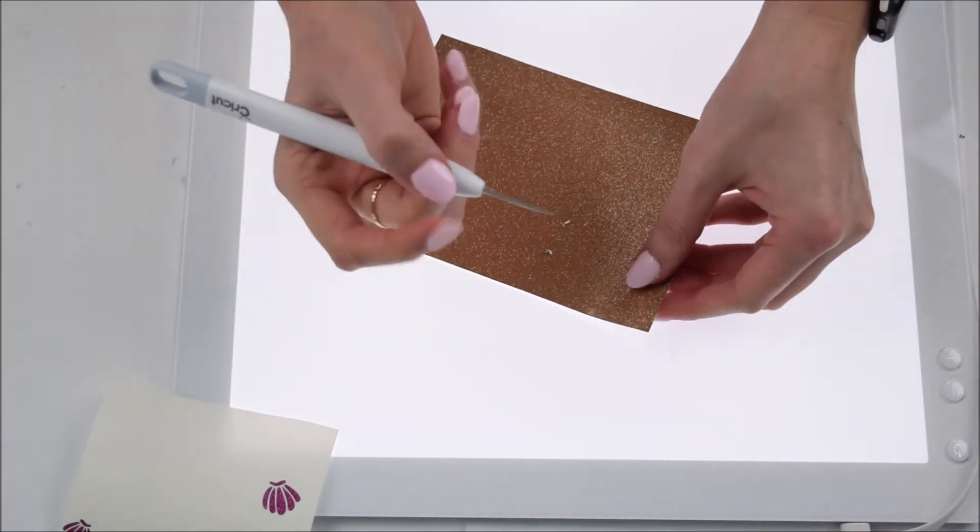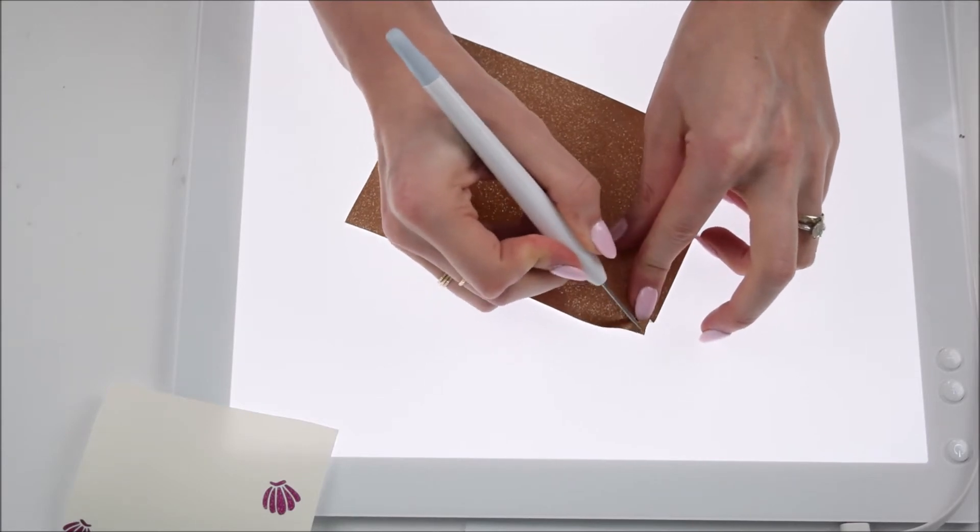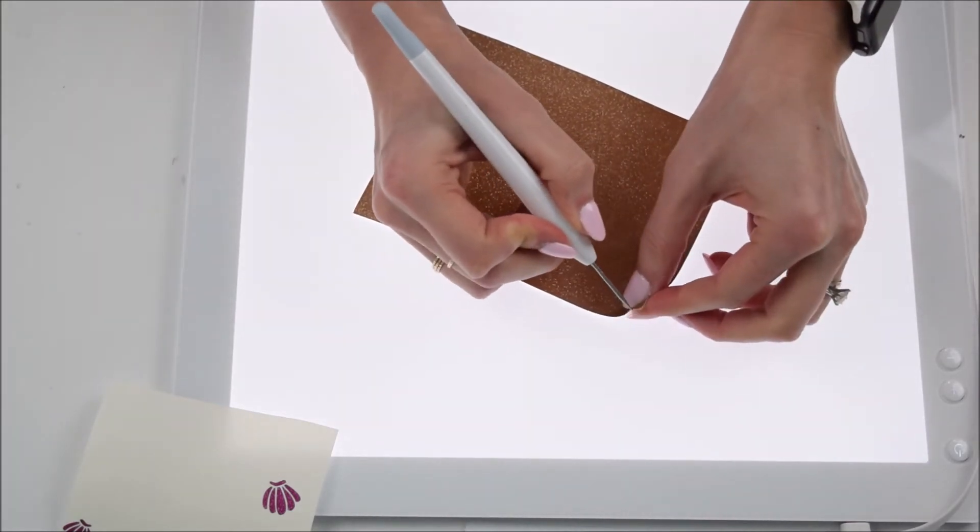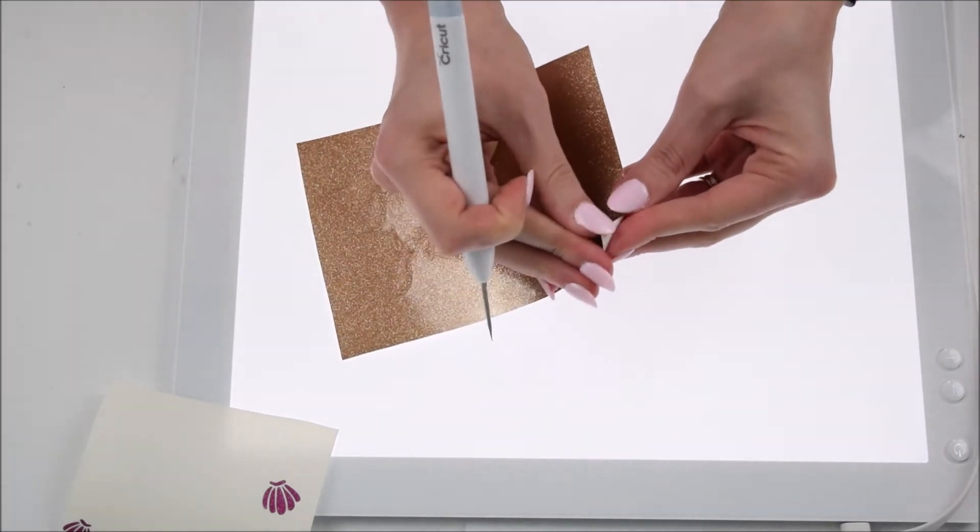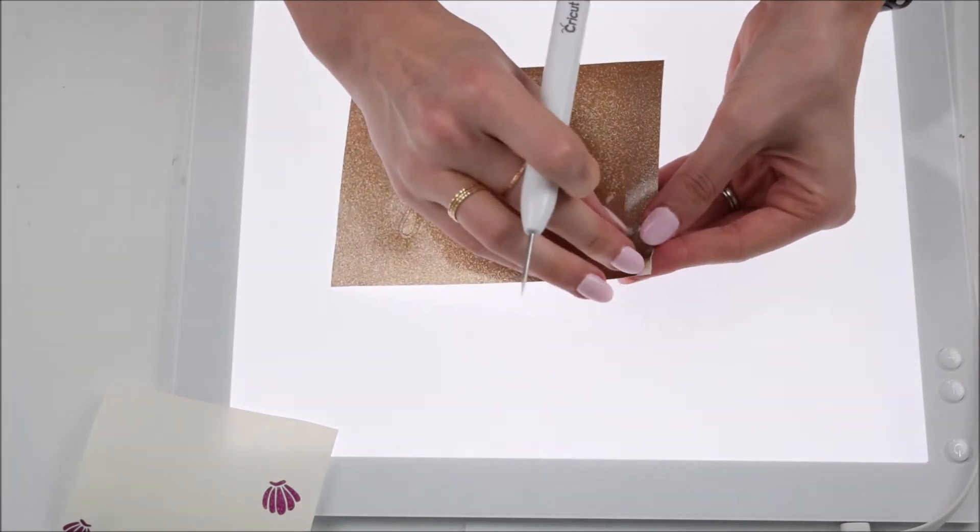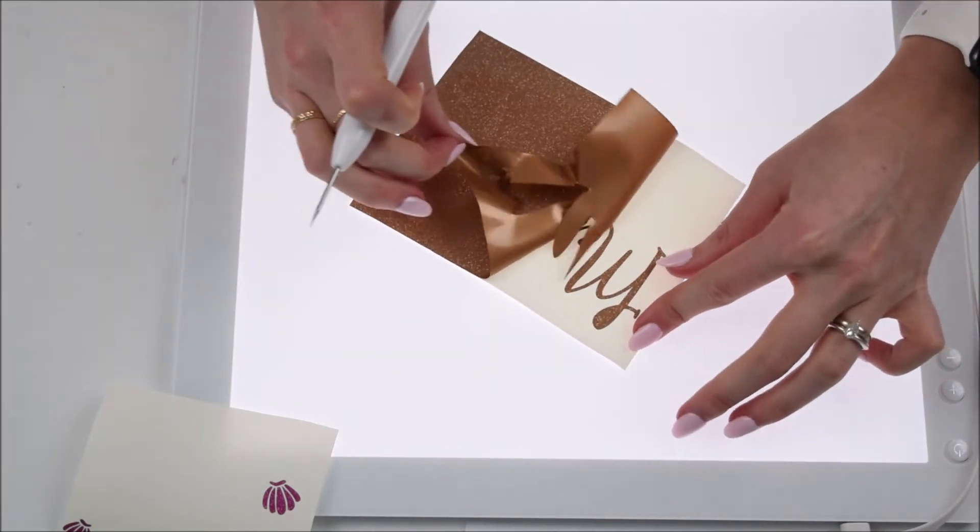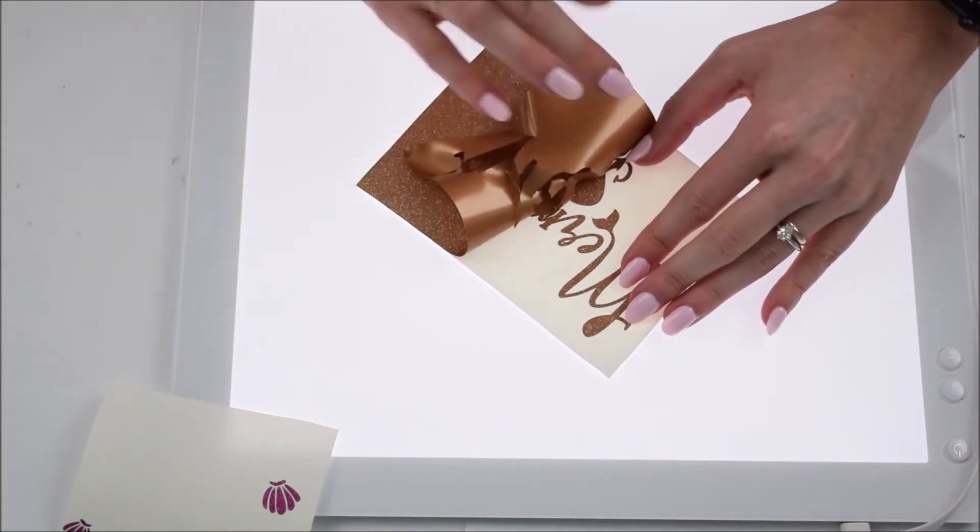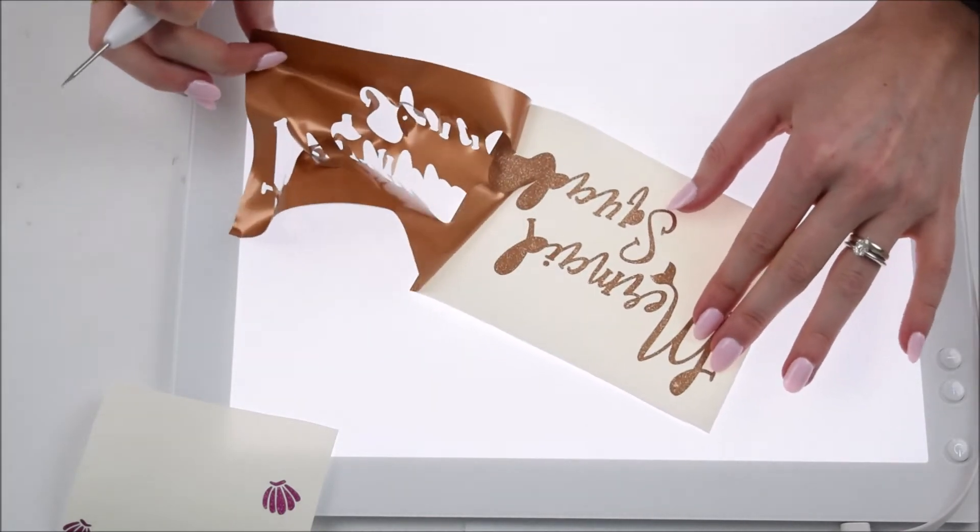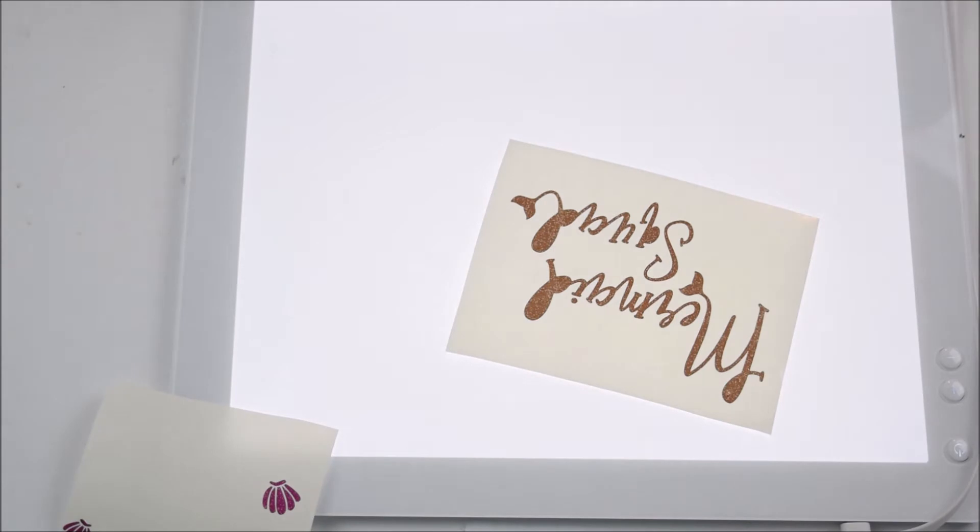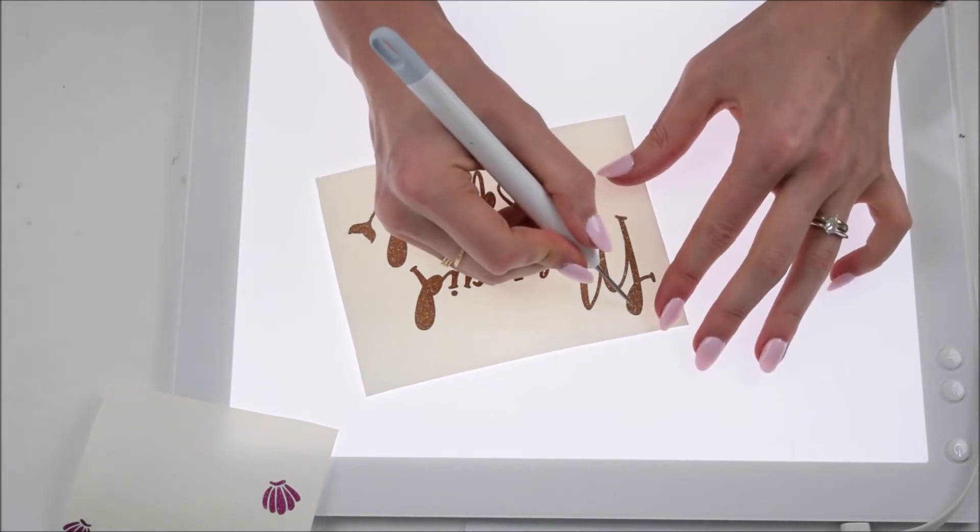Here's one piece I have not yet weeded out and it's just my Mermaid Squad text that I'm doing here. You should be somewhat familiar now with the concept of weeding, but just giving you a little visual here that you're going to want to peel away the excess vinyl and make sure you get your letters all cleaned up so that they look good and then we're going to move on to adding our transfer tape.